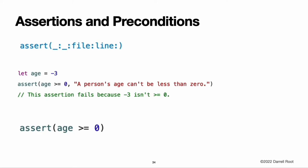The difference between assertions and preconditions is in when they are checked. Assertions are checked only in debug builds, but preconditions are checked in both debug and production builds. In production builds, the condition inside an assertion is not evaluated. This means you can use as many assertions as you want during your development process without impacting performance in production.